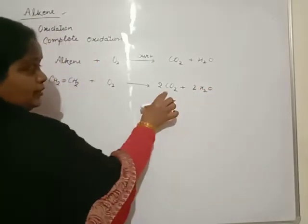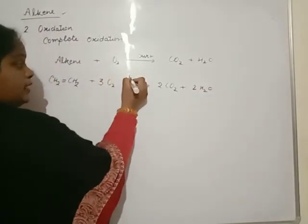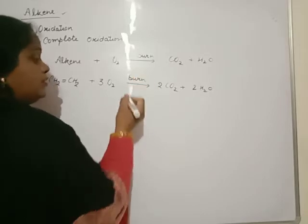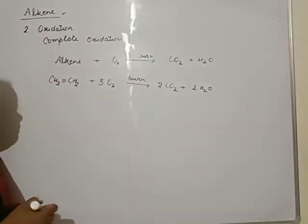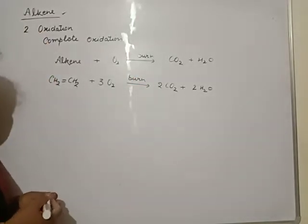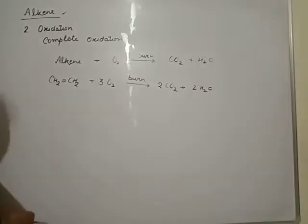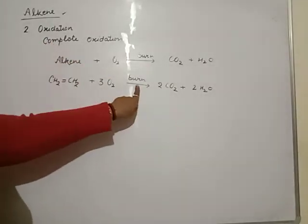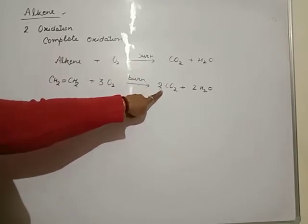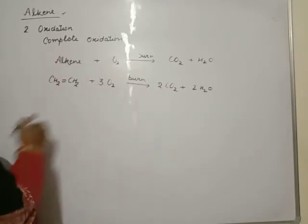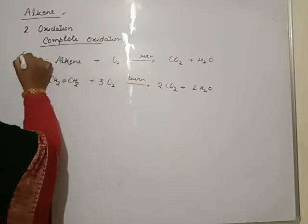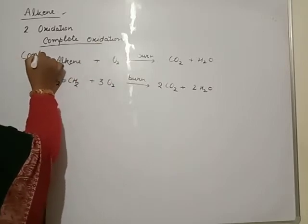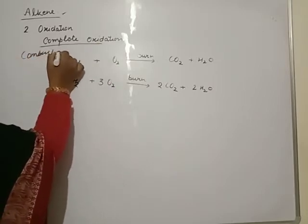How many oxygens required? Total six burning in air. On complete oxidation, every unsaturated or saturated hydrocarbon on complete oxidation will be burning in air to give carbon dioxide and water, which releases a lot of energy. This process is known as combustion.